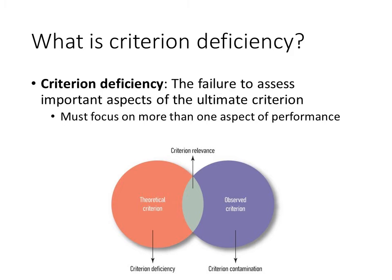Imagine we want to hire an administrative assistant, but the work sample that we administer does not assess the applicant's ability to type using a computer. Because typing is such an important part of the job, and because our measure doesn't assess typing, our criterion measure is deficient. This is one of the reasons why we often use more than one predictor — each predictor overlaps with a different part of the ultimate criterion. In the Venn diagram, the overlap between the ultimate criterion and the actual criterion is called criterion relevance, representing what we're doing well in terms of measuring the construct. The aspects of the ultimate criterion that we are not covering represent criterion deficiency.